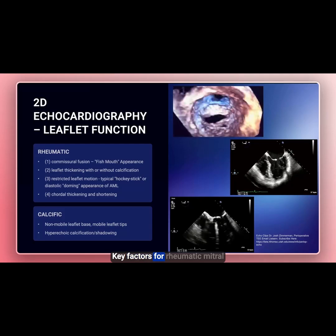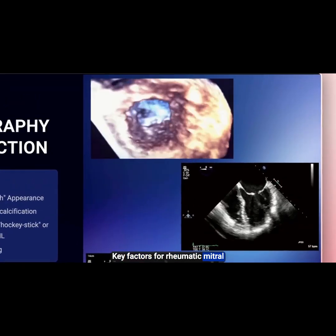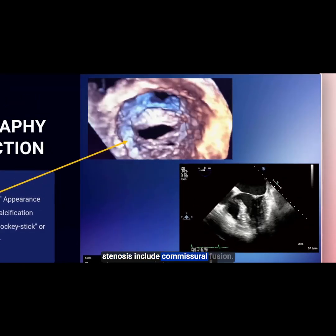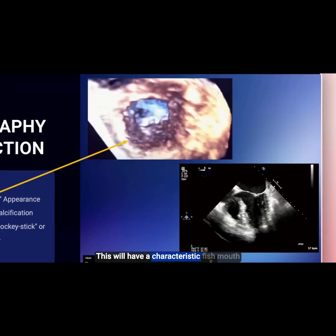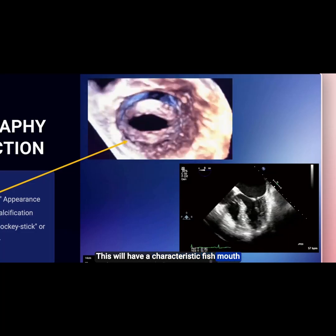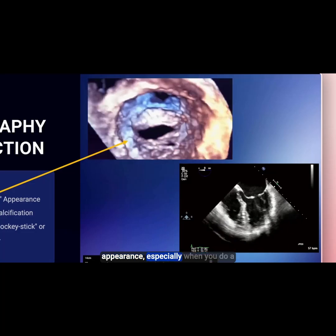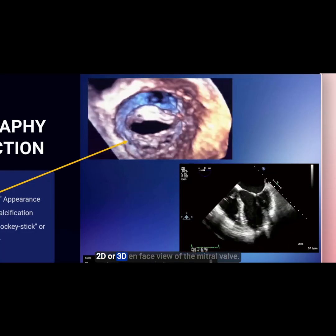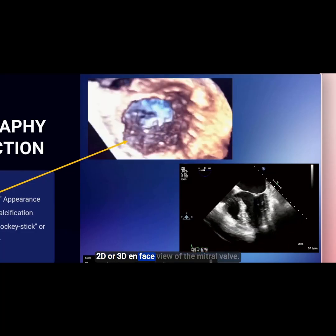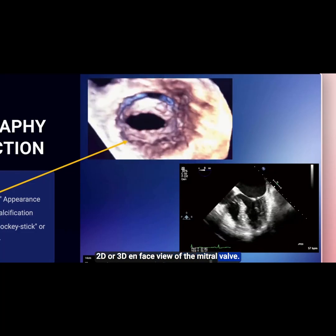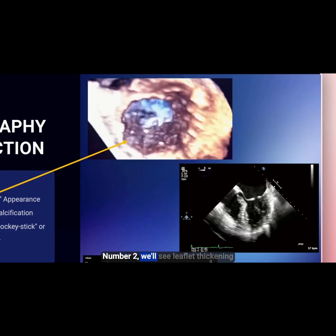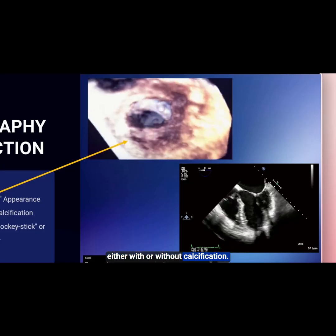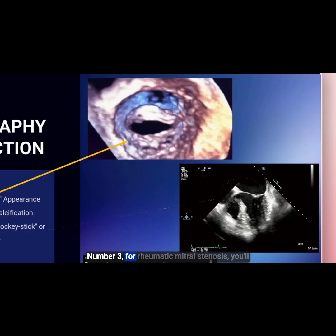Key factors for rheumatic mitral stenosis include commissural fusion. This will have a characteristic fish mouth appearance, especially when you do a 2D or 3D en-face of the mitral valve. Number two, we'll see leaflet thickening either with or without calcification.